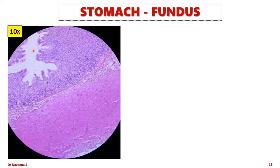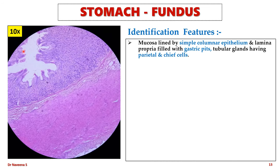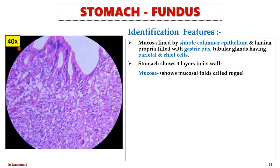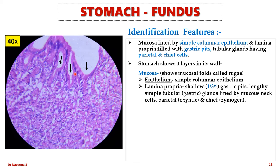Stomach fundus — here is the slide seen under low magnification. It is identified by the presence of simple columnar epithelium lining the mucosa and lamina propria having gastric pits and tubular glands with parietal and chief cells. Stomach shows four layers: mucosa, submucosa, muscularis externa, and serosa. Mucosa is thrown into folds known as rugae. The epithelium is simple columnar epithelium which invaginates into the lamina propria to form gastric pits occupying the upper one-third. Cells differentiate and extend into the lamina propria as lengthy simple tubular glands — gastric glands — lined by three types of cells: mucus neck cells, parietal cells, and chief cells.